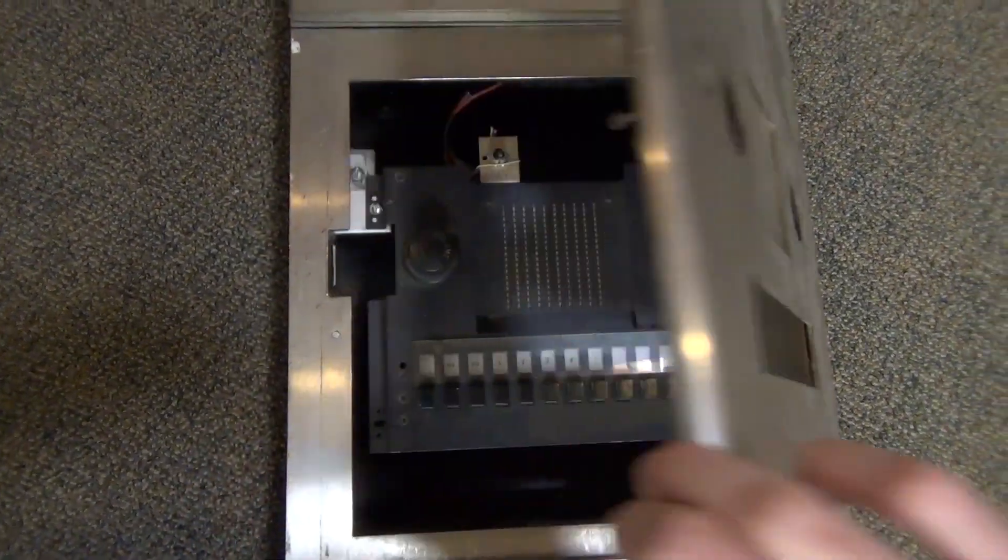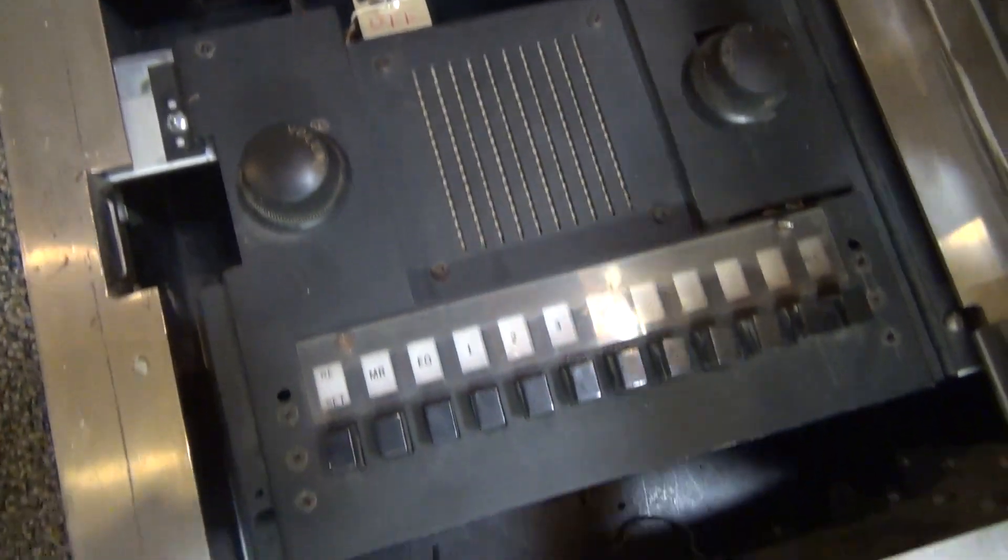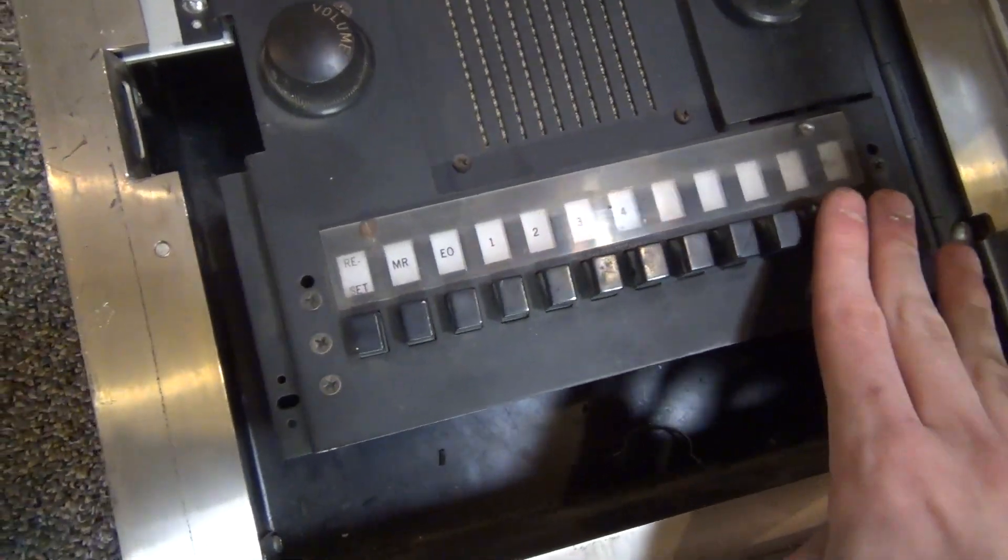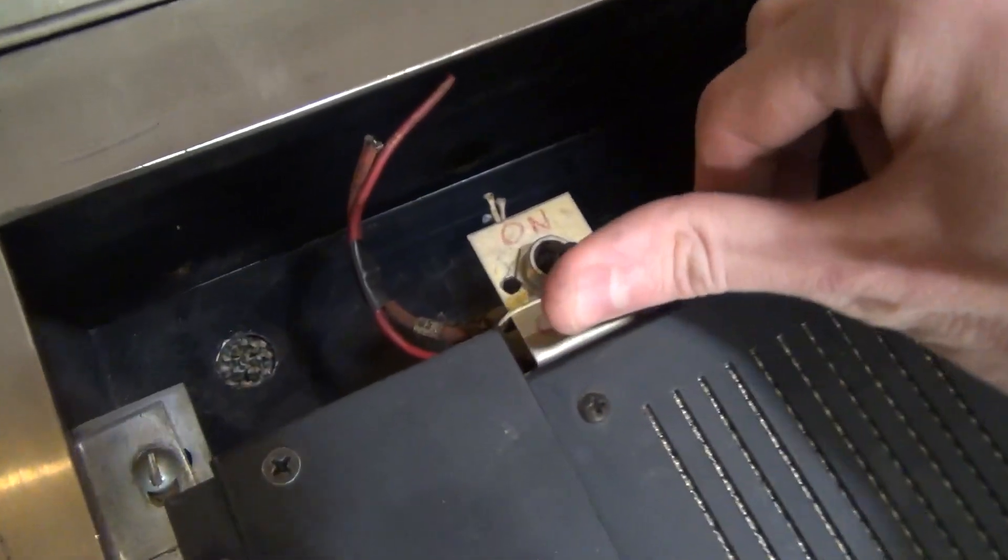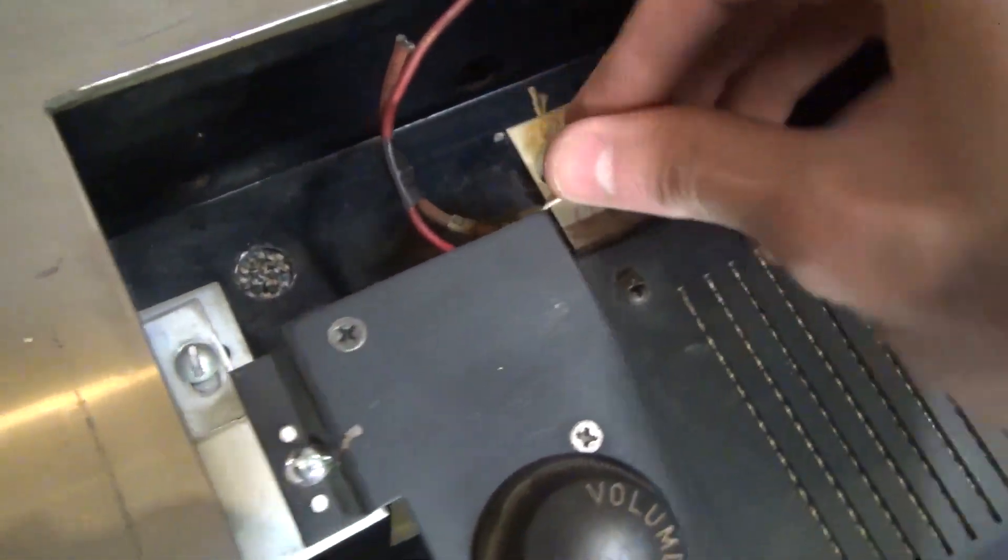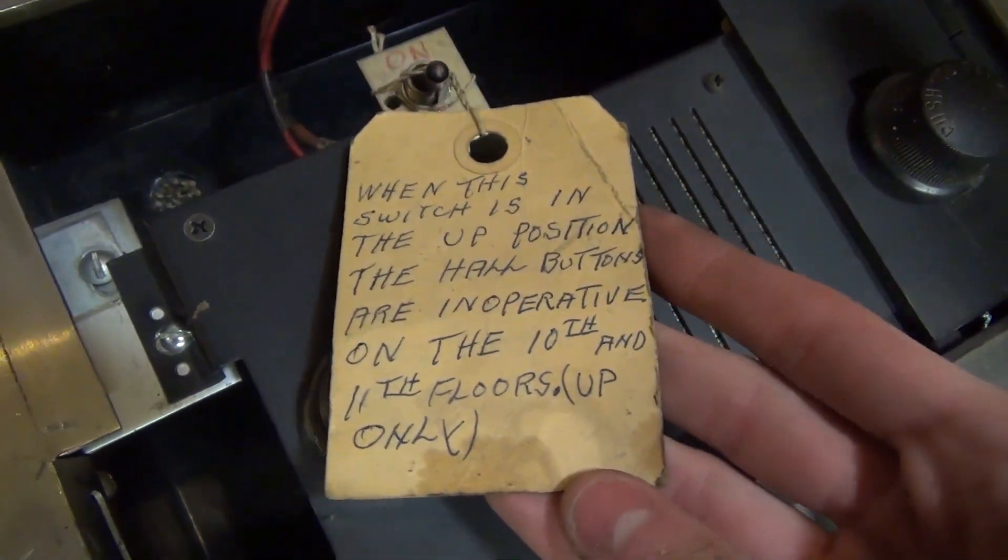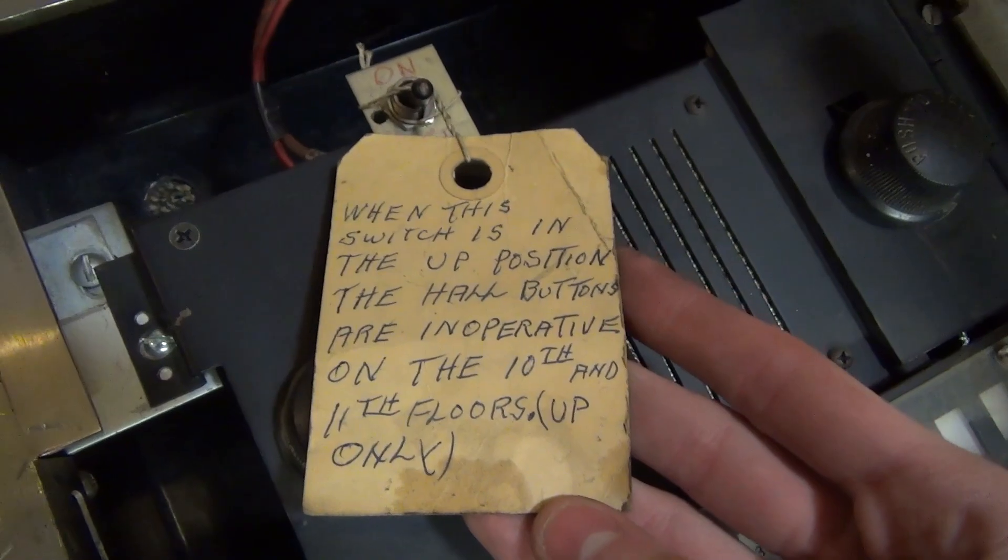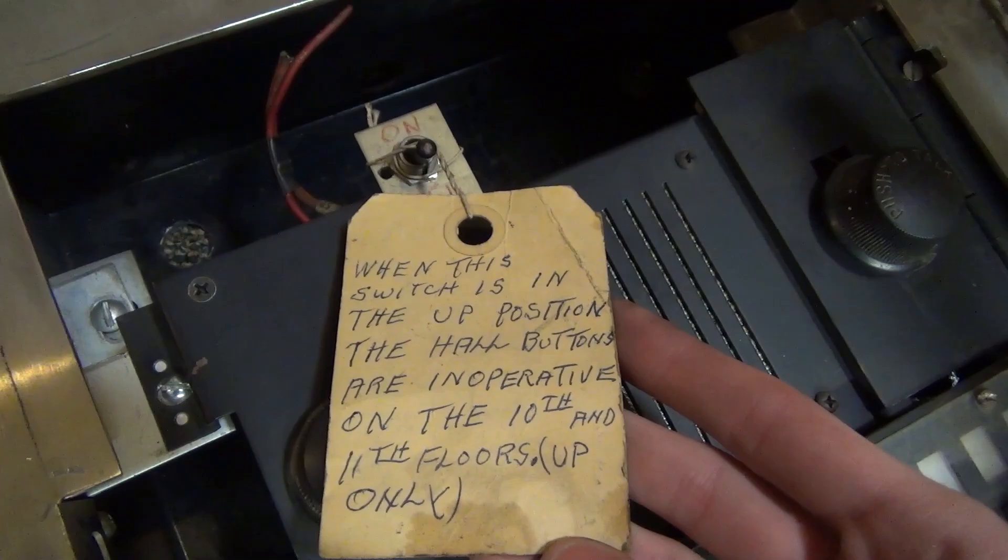In the middle section, there is this communication system, sort of like a PA system. I've never really seen these used or really understand how they work, but there's a lot of different buttons on the bottom. There's a volume knob and a push to talk button. And then up here, there is this little toggle switch that was added on. And it has this interesting text. When this switch is in the up position, the hall buttons are inoperative on the 10th and 11th floors up only. That's kind of interesting. I'm not sure what that was for.